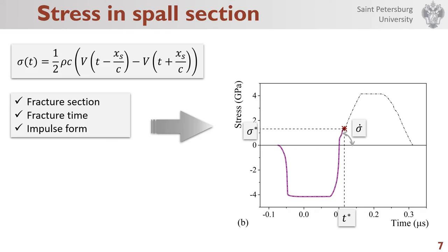Now we have all data to calculate stress-time dependence in spalled section. Here you can see calculation for experiment presented on previous slide. Negative values of stress are compressive stress and positive values are tensile stress. The dashed line here is stress calculated according to the equation presented on the slide.